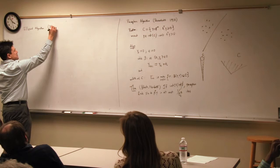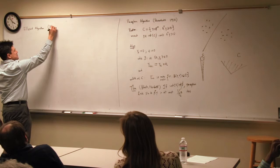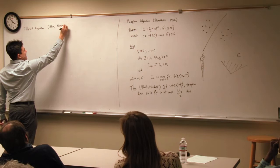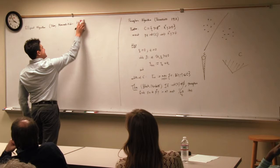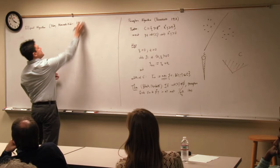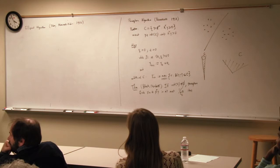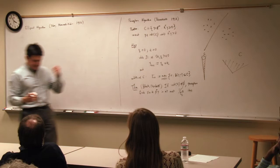The ellipsoid algorithm was due to Shor and also Nemirovsky, around 1976-77. The idea is: suppose the set C is contained in some initial ellipsoid E_T with center Y_T. If the center is not in C, we find a separation hyperplane and squeeze a smaller ellipsoid into the half of the previous ellipsoid that must contain C.